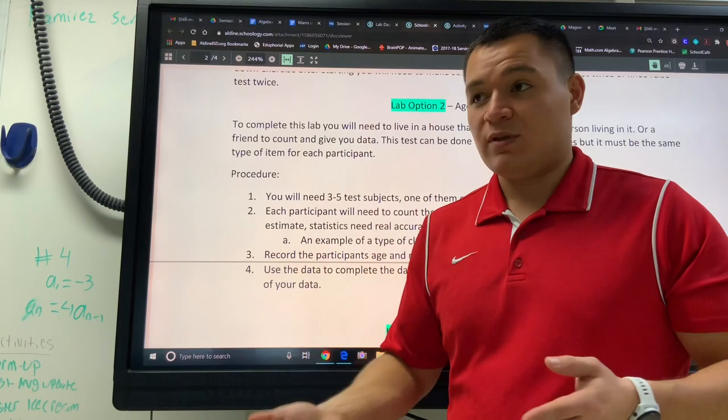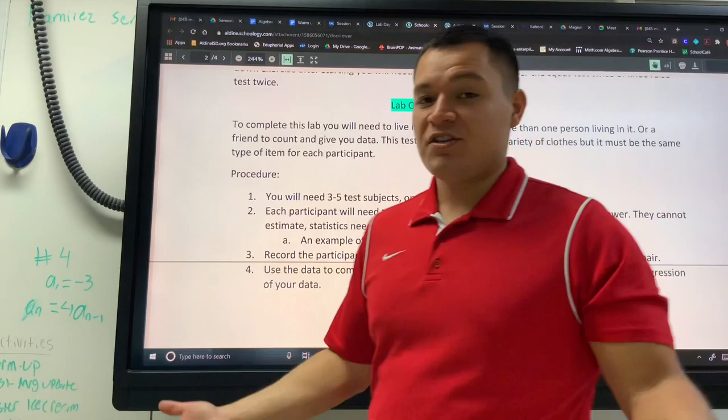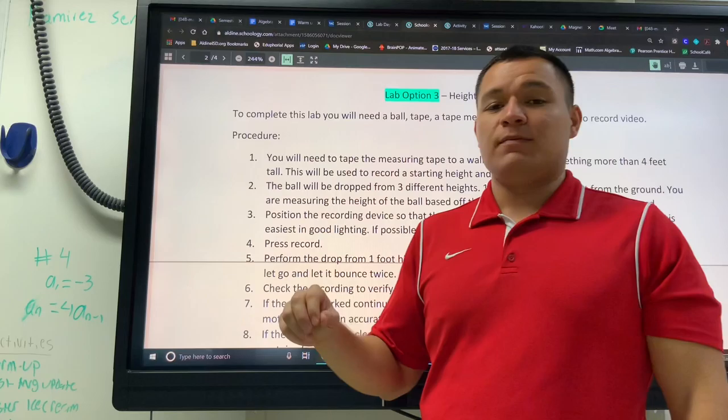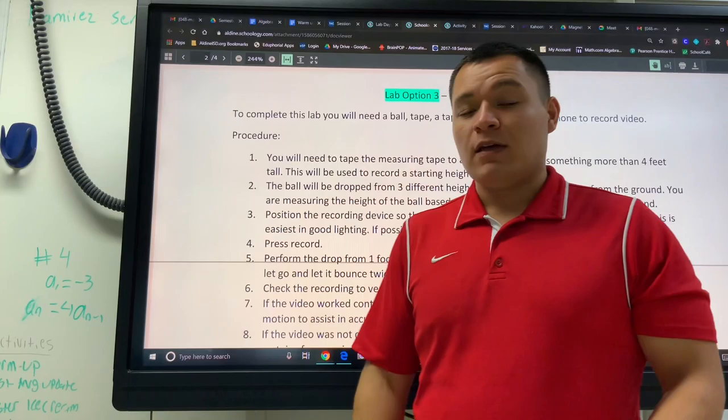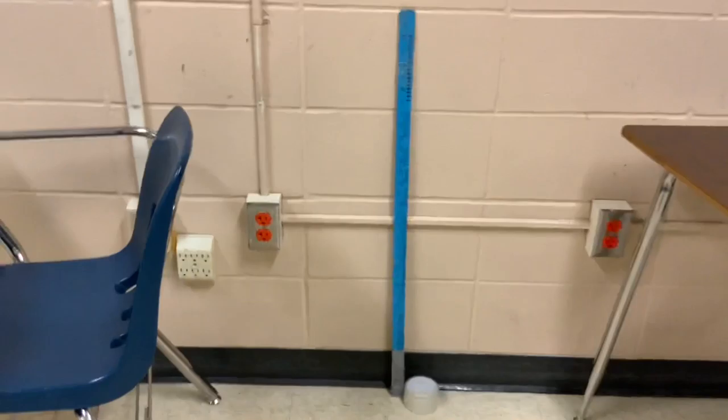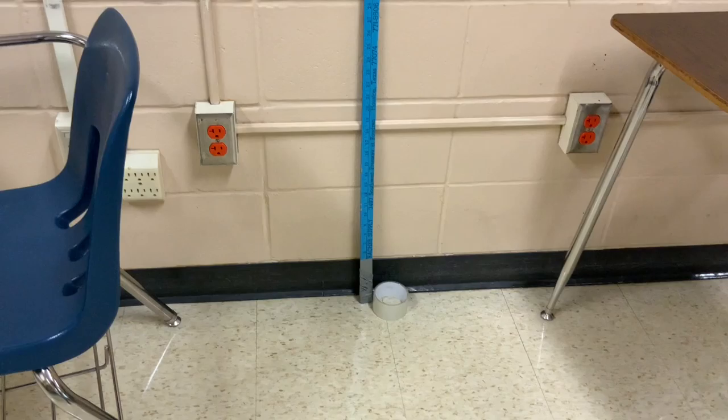You would probably want somebody young, somebody in the middle like around their 20s, maybe somebody under your age, and then somebody who's a full adult with whatever age that is and their number of clothes. The final lab has to do with measuring how high something is bouncing. So you're going to need a measuring tape for this one, and I have one set up over here, and I'll just give you a quick example of what we would do.